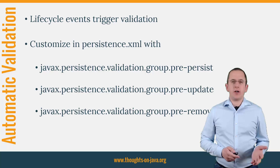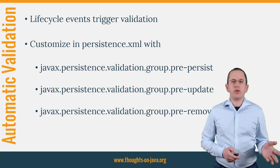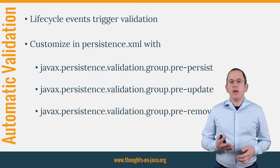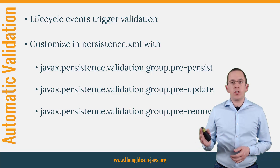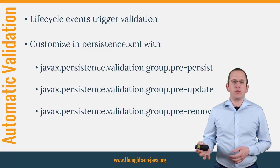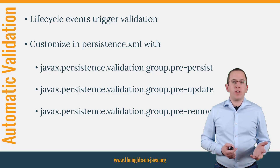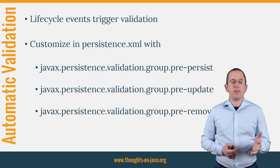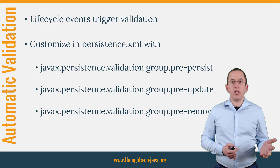The validation gets automatically executed when Hibernate, or any other JPA implementation, triggers a pre-persist, pre-update or a pre-remove lifecycle event. The pre-persist and pre-update events trigger the validation of the default validation group, which contains all validation constraints. Pre-remove lifecycle events trigger the validation of no validation group. You can change this behavior in the persistence.xml file by using the properties you can see here on the slide. They allow you to define the groups which shall be validated for each lifecycle event.